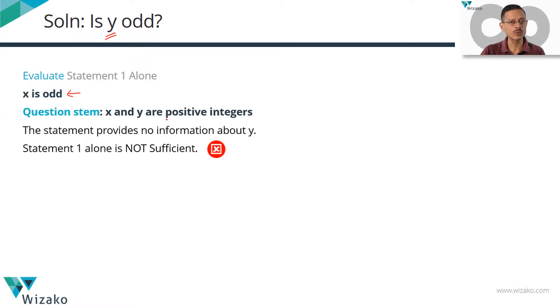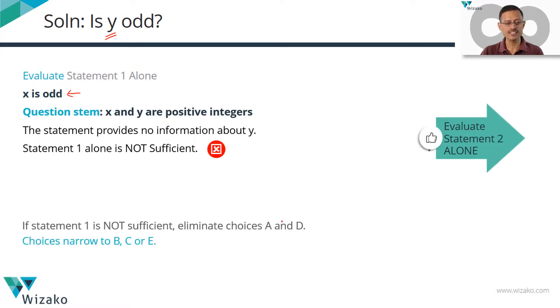Despite knowing that x and y are positive integers, with no information about y, we will not be able to deduce whether y is odd or otherwise. So statement 1 alone is not sufficient.